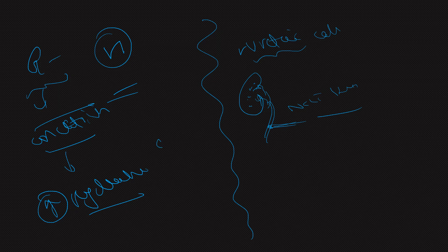Is there any cutoff to classify something as a stone versus a concretion? No — it is a subjective finding. If the radiologist feels it is not concentrated enough to call it a stone, they will mention it as concretion. There is no theoretical cutoff, but ideally, less than 5 mm they will mostly mention as concretion, and more than that they will usually mention as a stone.